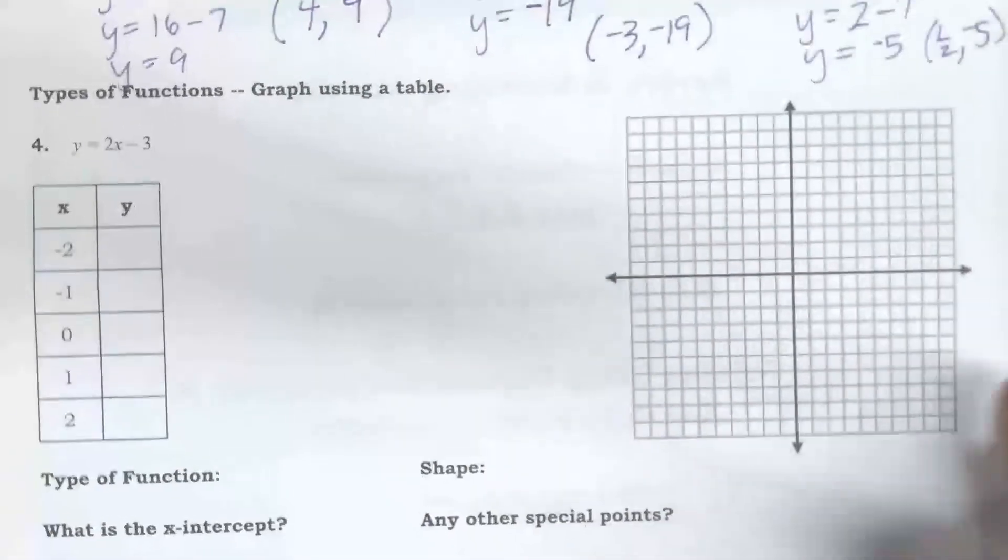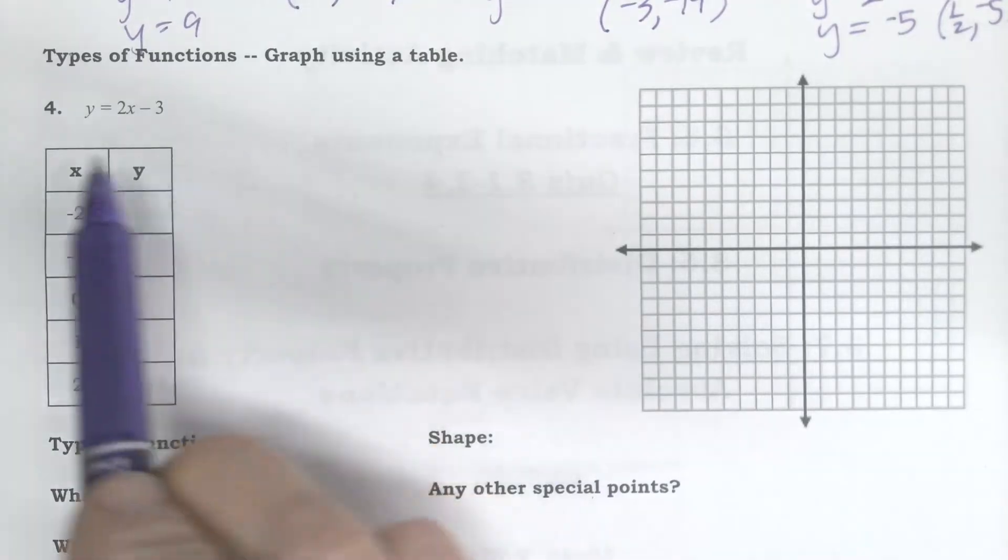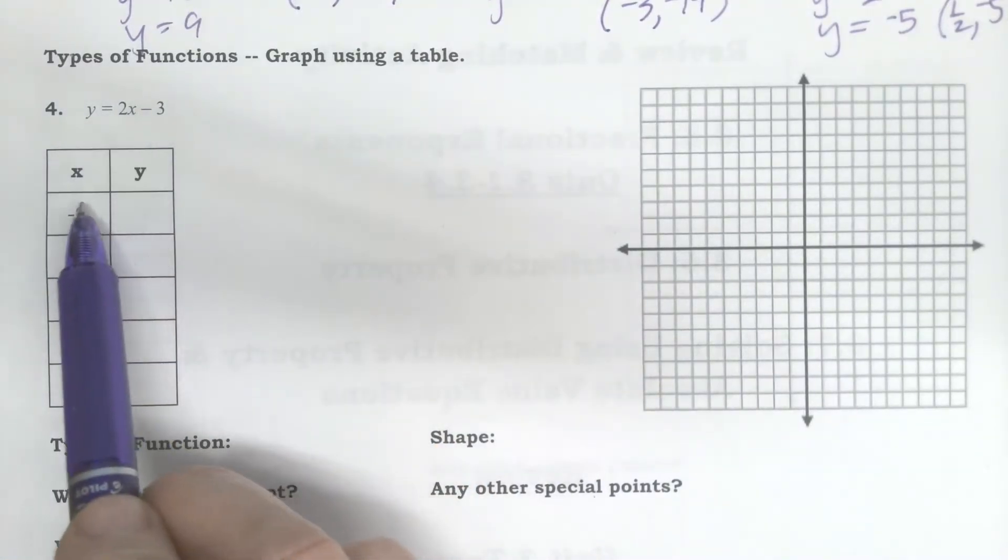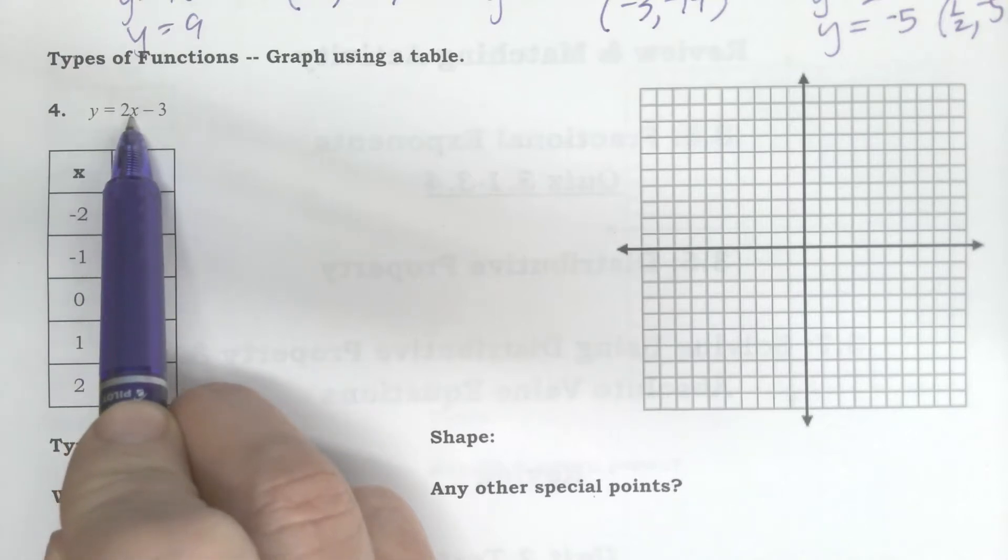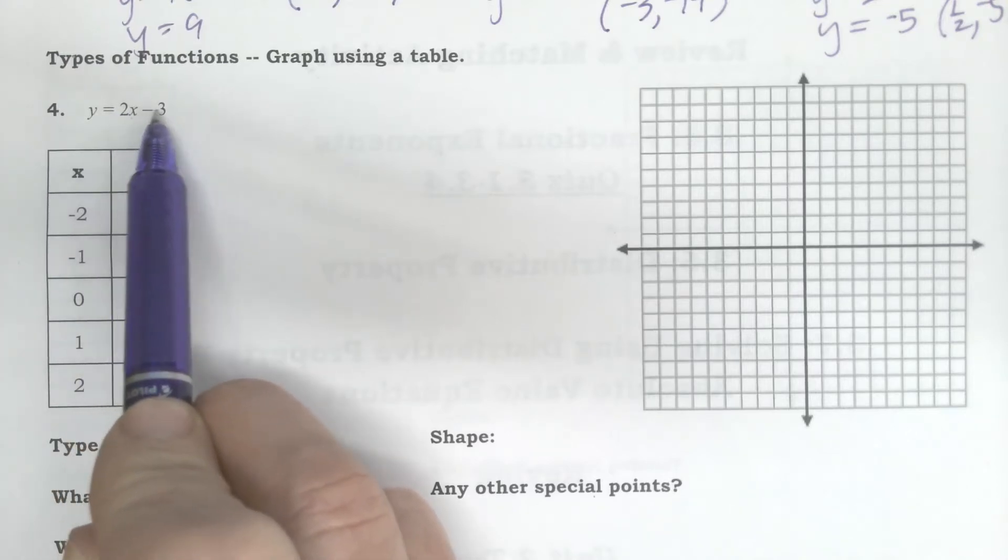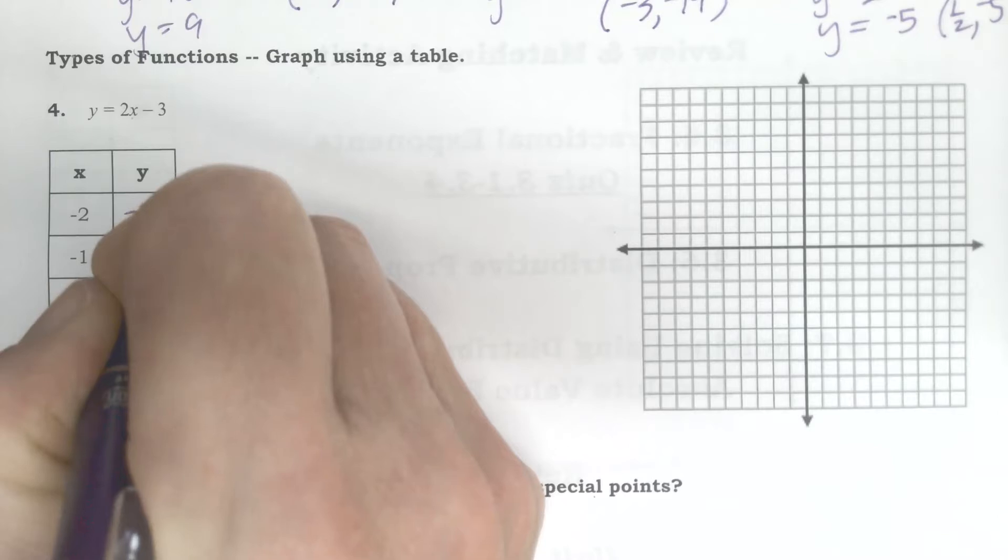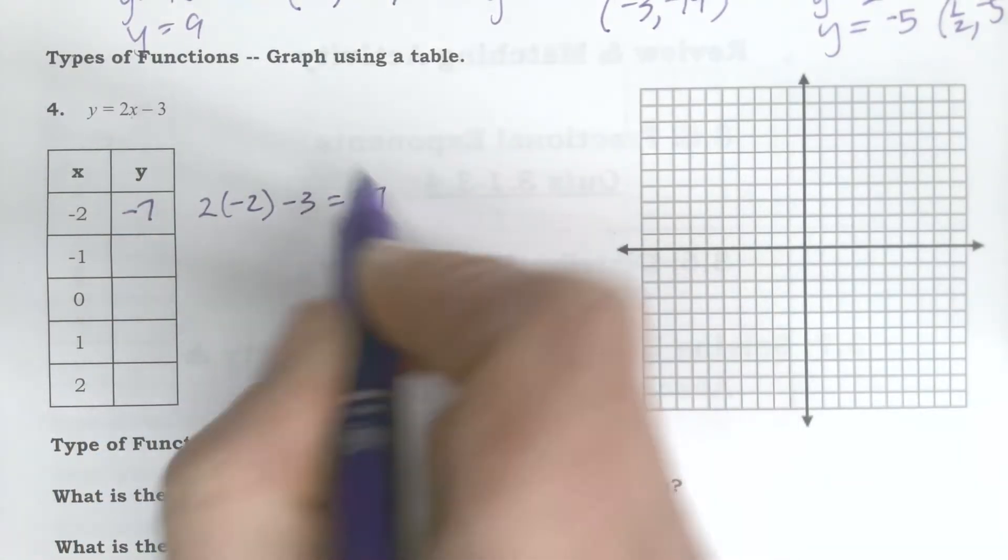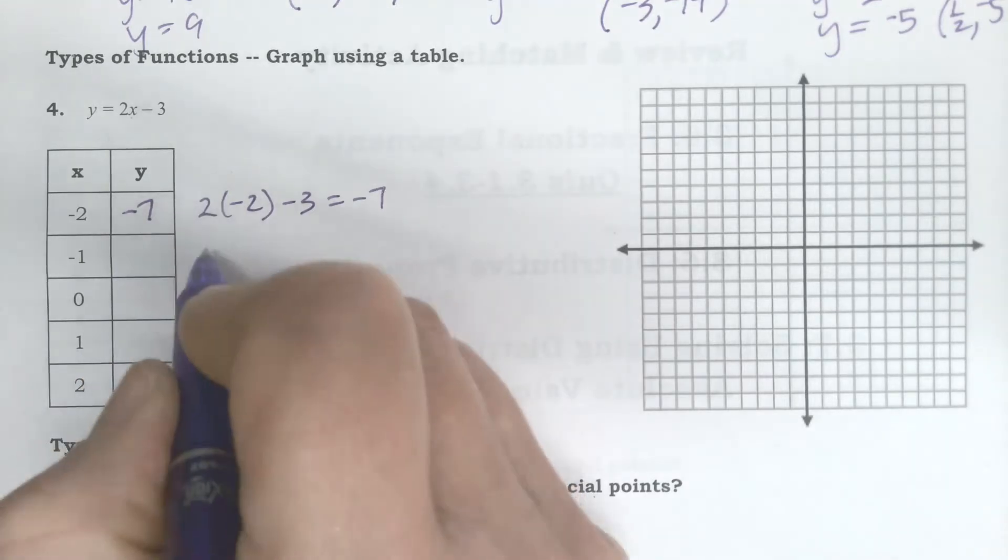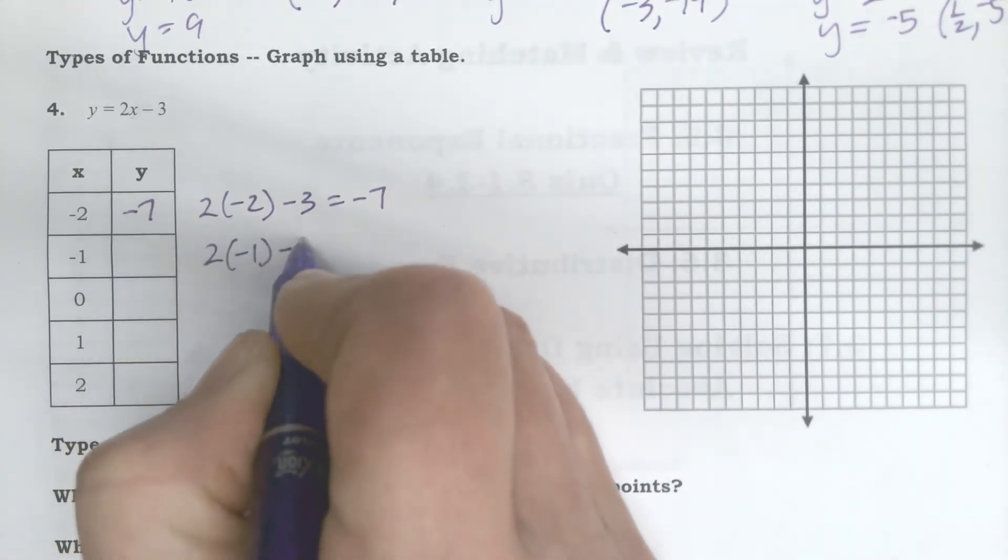All right, so we're going to put it together in our different types of functions. And so in this particular graph when I plug in negative 2, I do 2 times negative 2 which is negative 4, negative 4 minus 3 is negative 7. So that was 2 times negative 2 minus 3, got negative 7, so that's what went in that spot. Then I do 2 times negative 1 minus 3.